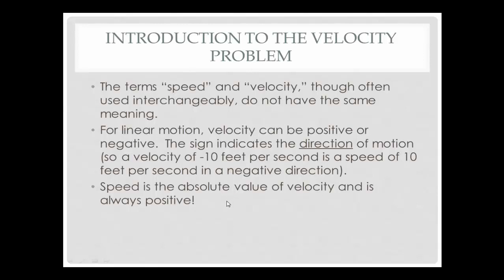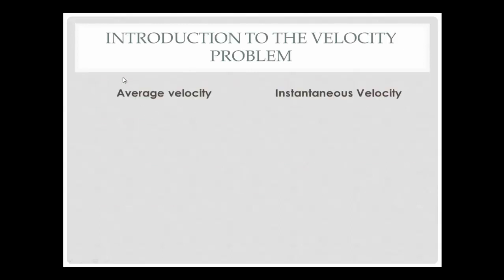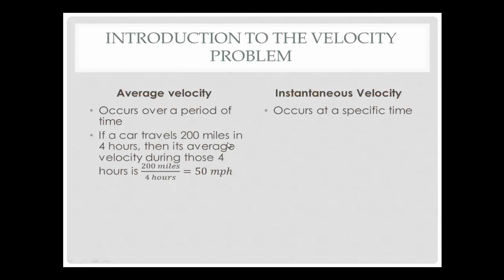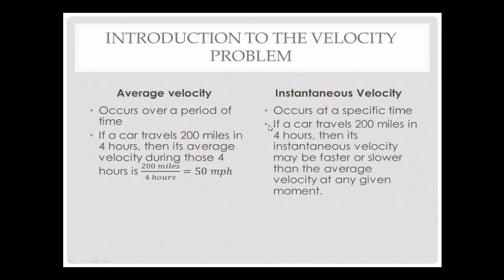Now that we understand what we mean by velocity, let's talk about instantaneous velocity. We have average velocity and instantaneous velocity. Average velocity occurs over a period of time — between two times — whereas instantaneous velocity occurs at one specific time. If a car travels 200 miles in four hours, its average velocity is 200 miles divided by four hours, so about 50 miles per hour on average. Of course the car didn't travel 50 miles per hour the entire time. The instantaneous velocity would be faster or slower than 50 miles per hour. So instantaneous velocity is what happens at a specific moment.